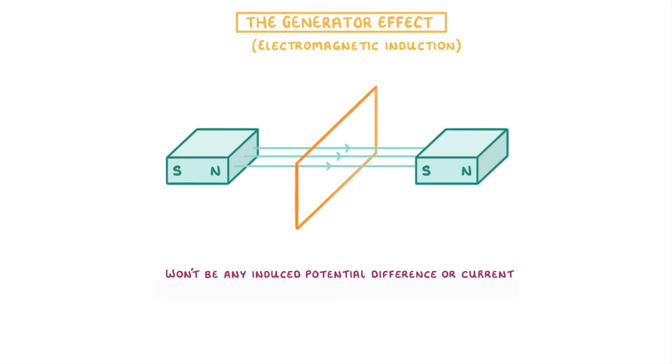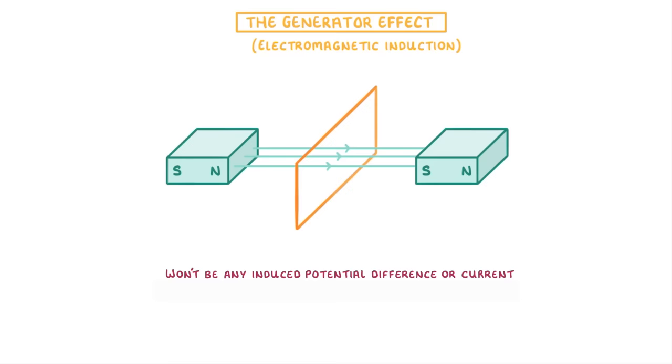If we instead move the wire back and forth like this though, then this time there won't be any induced potential difference or current, because the wire isn't actually experiencing a change in the magnetic field.